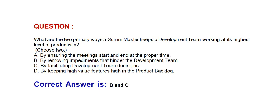Next question: What are the two primary ways a scrum master keeps a development team working at its highest level of productivity? Choose two options. Option A: By ensuring the meetings start and end at the proper time. Option B: By removing impediments that hinder the development team. Option C: By facilitating development team decisions. Option D: By keeping high value features high in the product backlog. Correct answer is Option B and Option C: By removing impediments that hinder the development team, and by facilitating development team decisions.